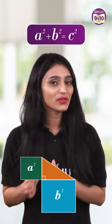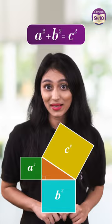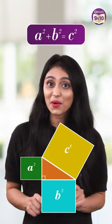But here is a twist. What if I say it's not just about the square? It works for any shape, as long as they are scaled versions of each other. Let's take semi-circles of diameter A, B, and C.